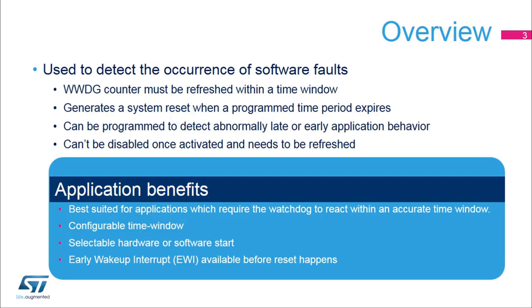The window watchdog is used to detect the occurrence of software faults. It has a programmable free-running down counter that must be refreshed within a window period that guarantees proper software execution. If a problem occurs and the program time period expires, the window watchdog generates a system reset.